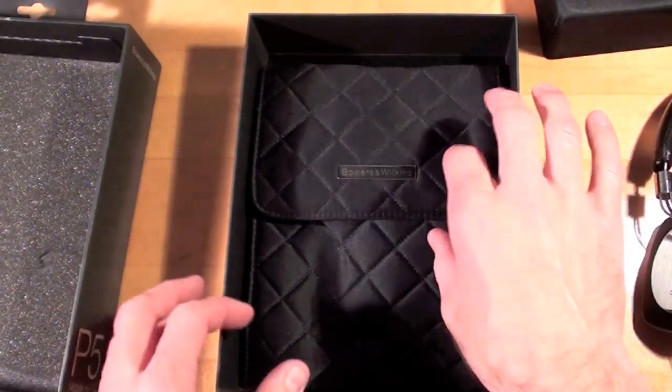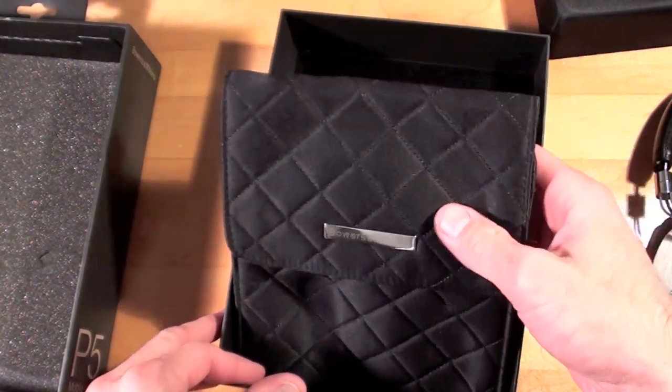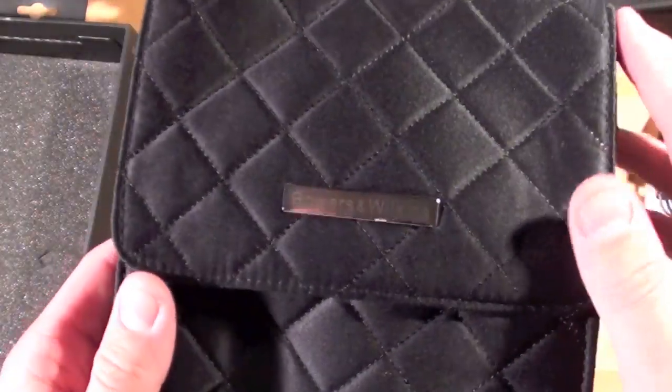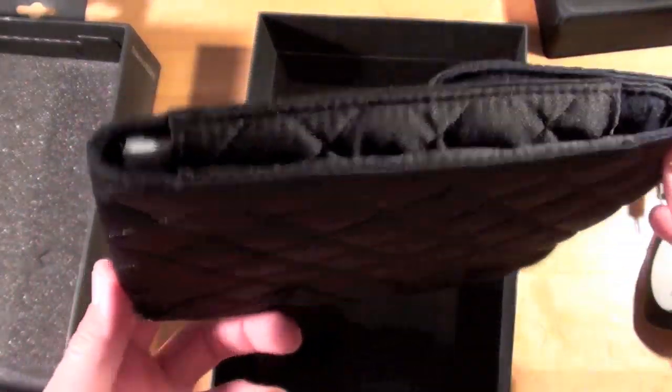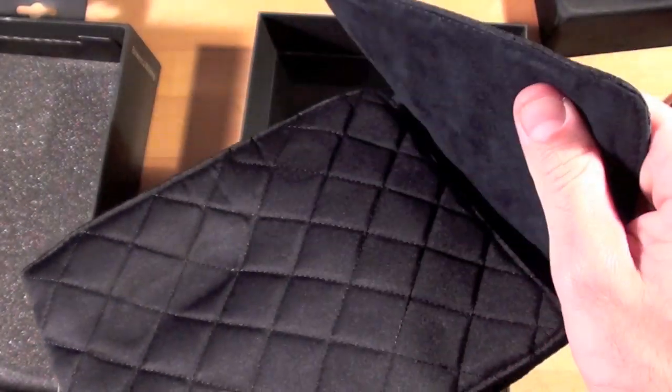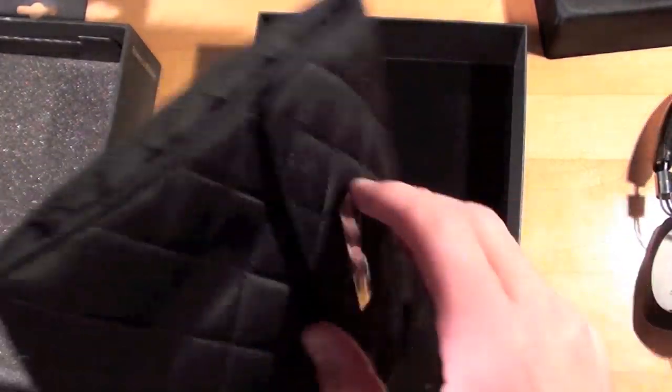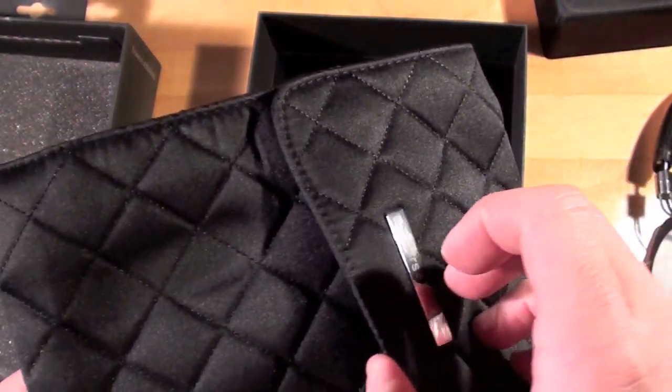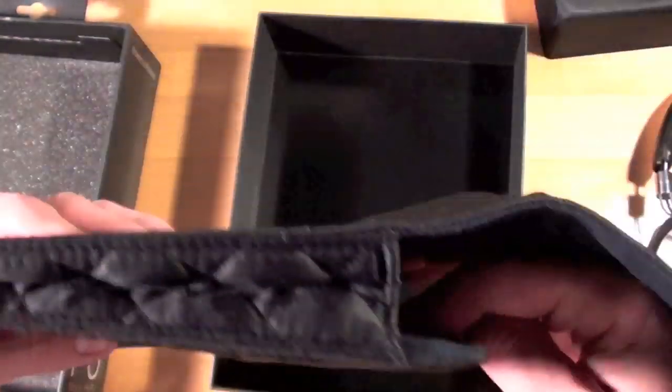And underneath you have the padded carrying case, and in there are some of the accessories and booklets. The case itself is made out of a quilted synthetic material with a very nice soft inner lining. It does have magnetic clasps to keep the flap closed and it does have that nice Bowers and Wilkins plaque on the front.